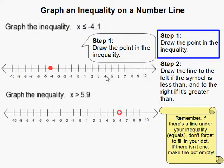All right, so in this example, this is x is greater than 5 and 9 tenths. So remember, there's no equals right here. Therefore, I left the dot open.